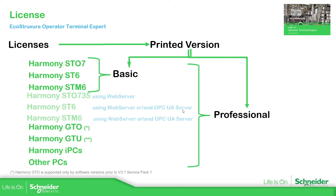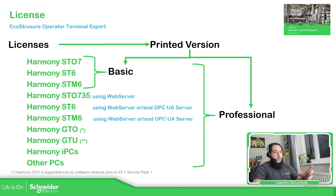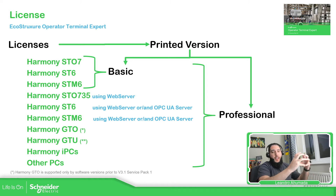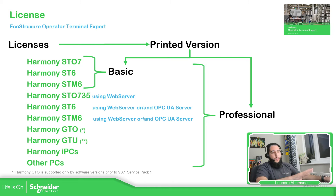That is not the only difference, because if we use the professional it allows you to do some additional communications related to the web server and OPC UA for the HMIs we have here. The web server is different from the web viewer. The web viewer allows you to monitor and control the physical HMI using your laptop — you put the IP address into your web browser and replicate the HMI on your laptop — which is different from the web server.